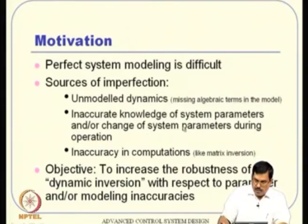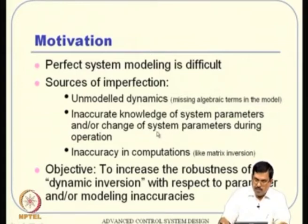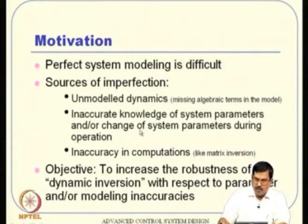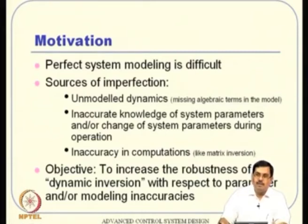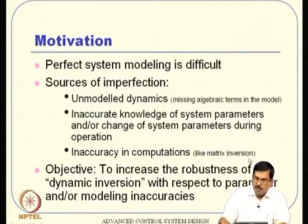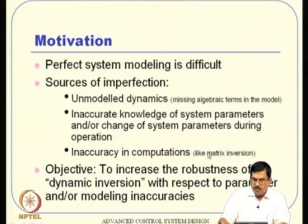System parameters also change during operation. For example, if your aircraft is flying, fuel is continuously burning out, and predicting exactly how much fuel is gone is difficult. Also consider passenger movements inside the aircraft — even if the total mass remains constant, the distribution of mass changes, and hence the moment of inertia value keeps changing. Another issue is inaccuracies in computation, such as matrix inversion with finite truncation leading to numerical problems.